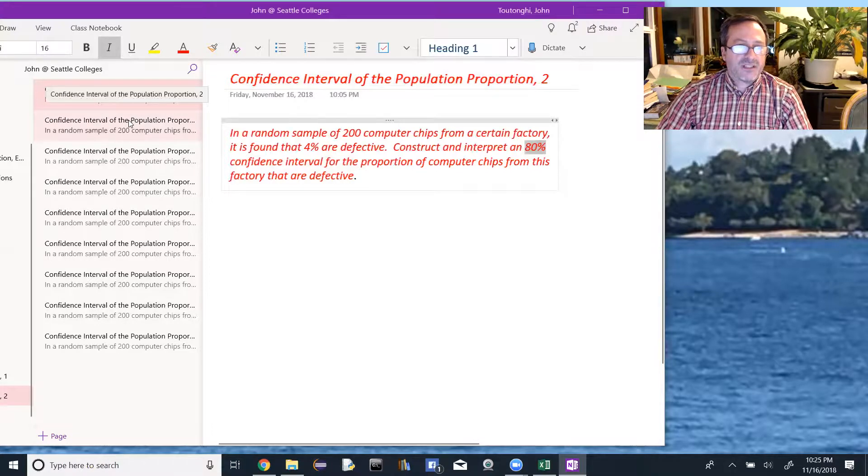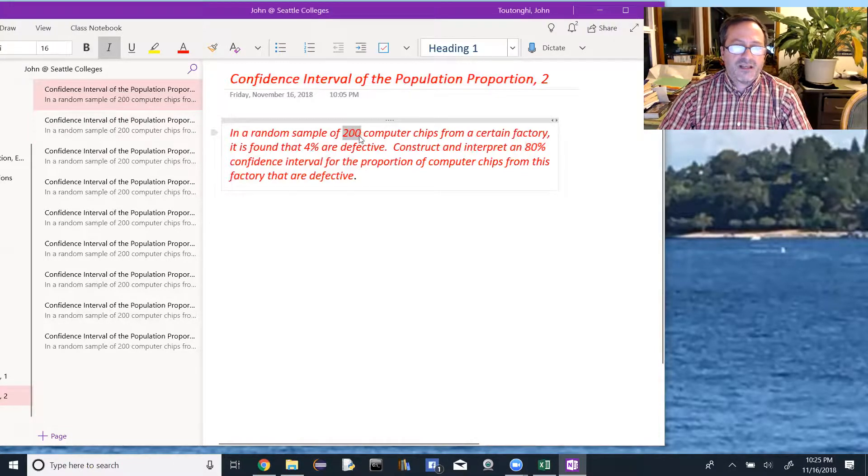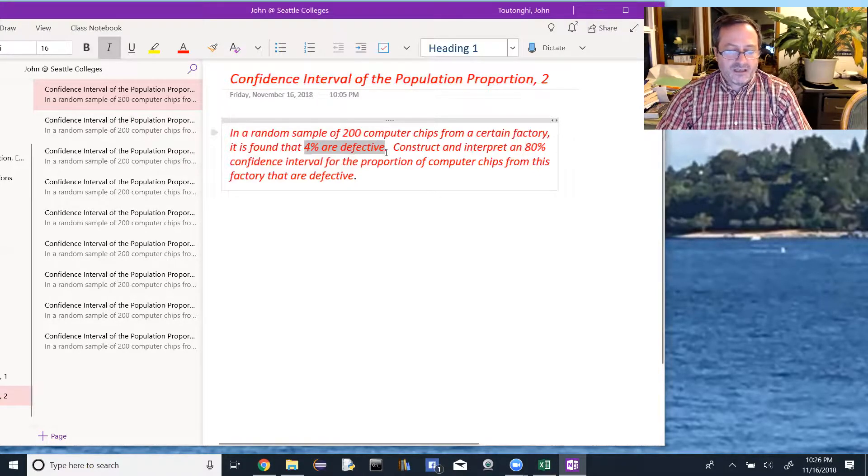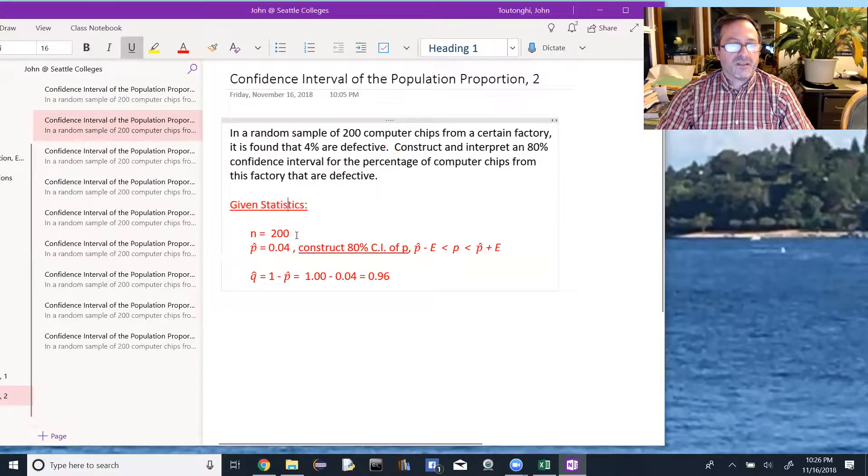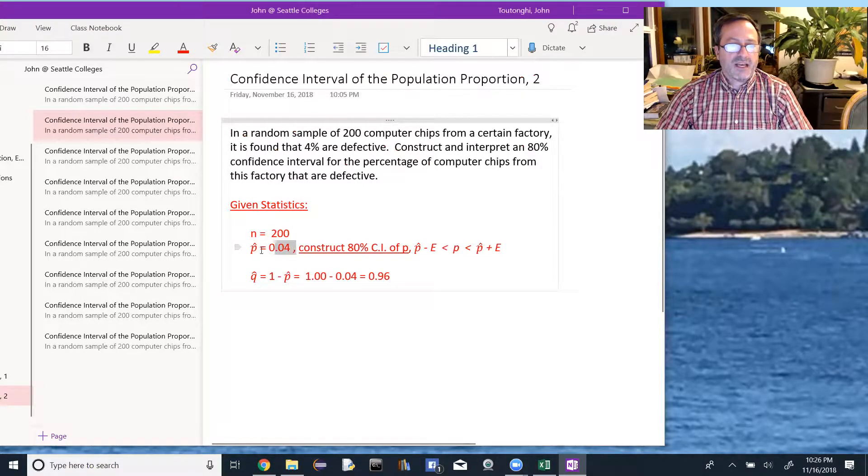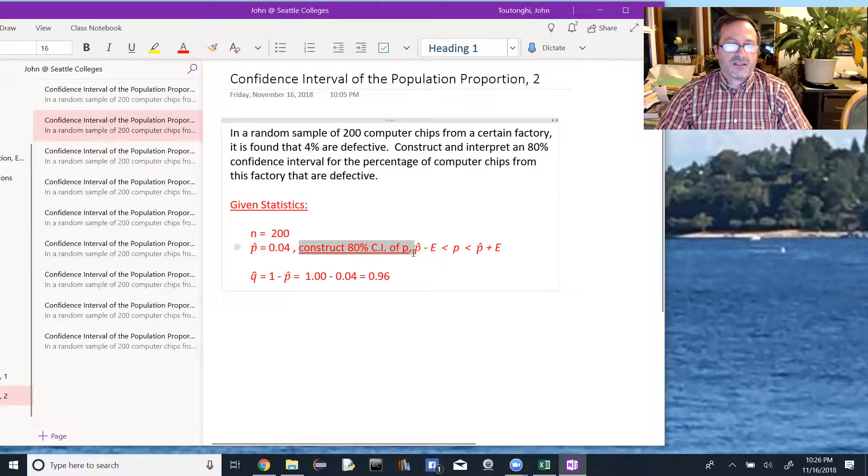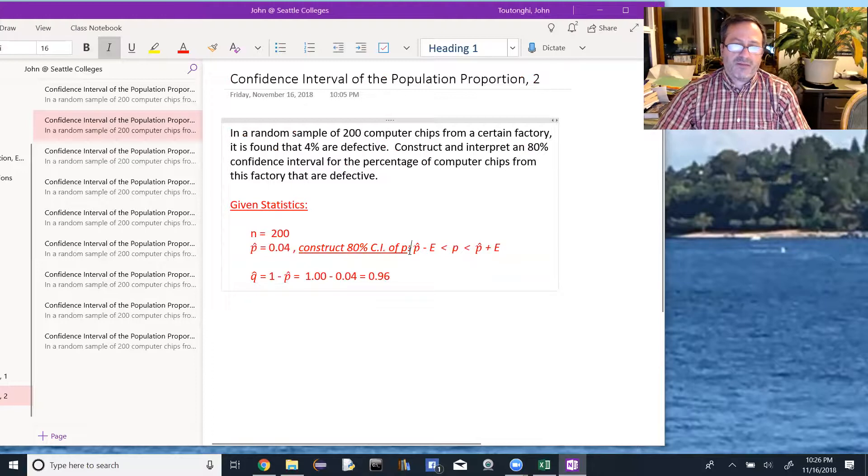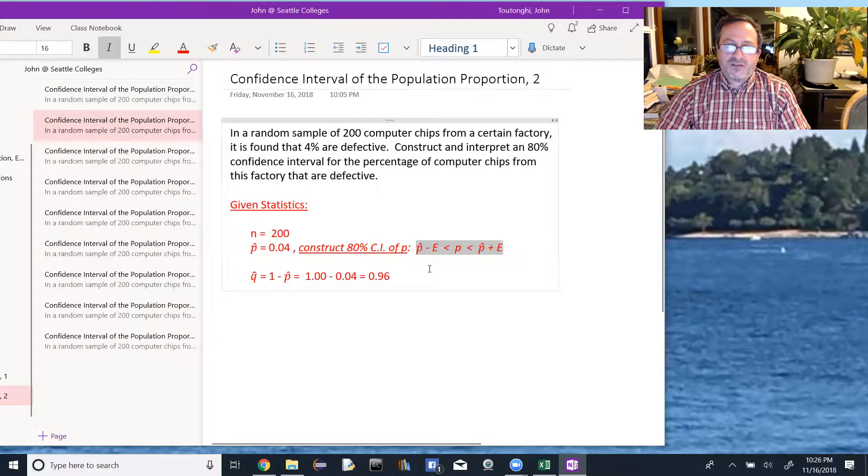We're first going to look for what are our given statistics. We see that n here is 200. And in this case, I'm not given x. I'm actually given p hat, the percentage of the defective ones. So that's already given to me. I don't have to find it. And we're looking to construct an 80% confidence interval of the population proportion.